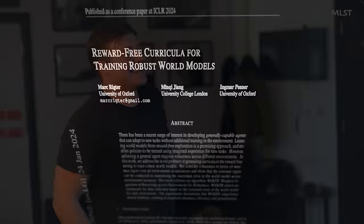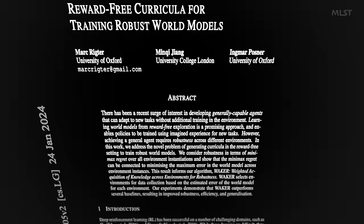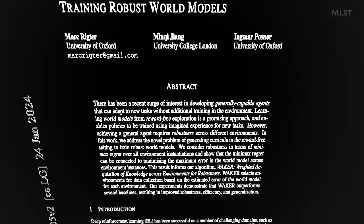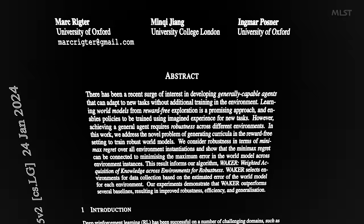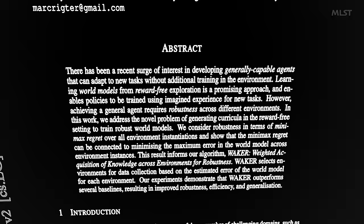The overarching question the paper tries to answer is how should we go about training very general agents? A general agent is one that's able to perform a lot of different tasks — different reward functions from a reinforcement learning perspective — but also perform those tasks in lots of different environments. We don't want a robot that can only do pick-up tasks in one kitchen; we want it to go into arbitrary apartments and perform tasks in arbitrary environments.